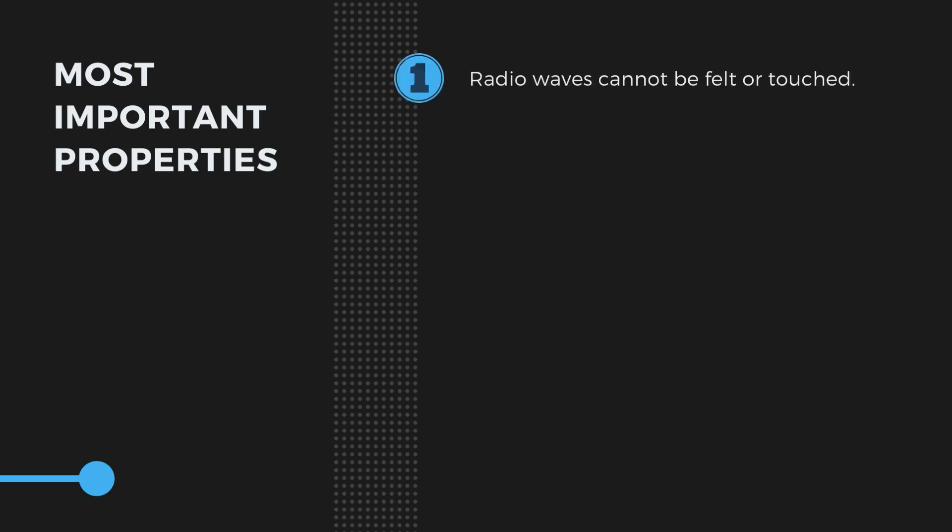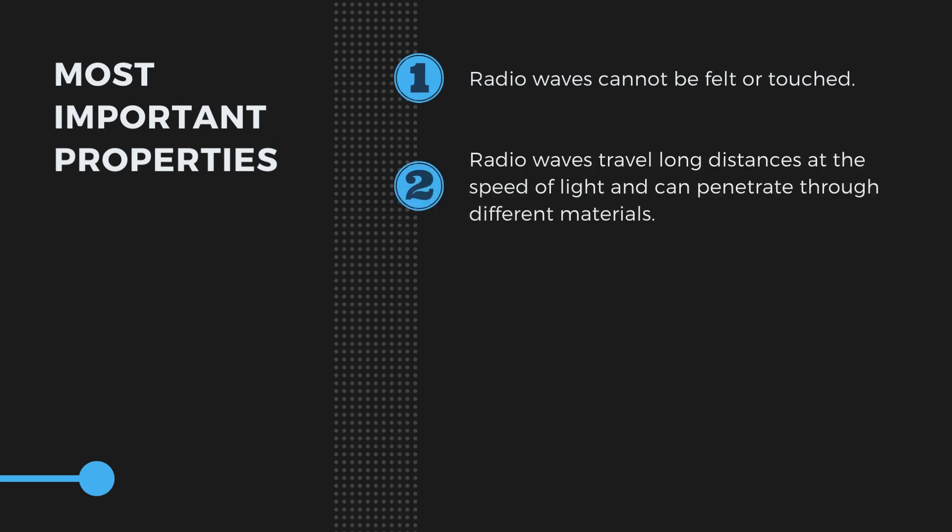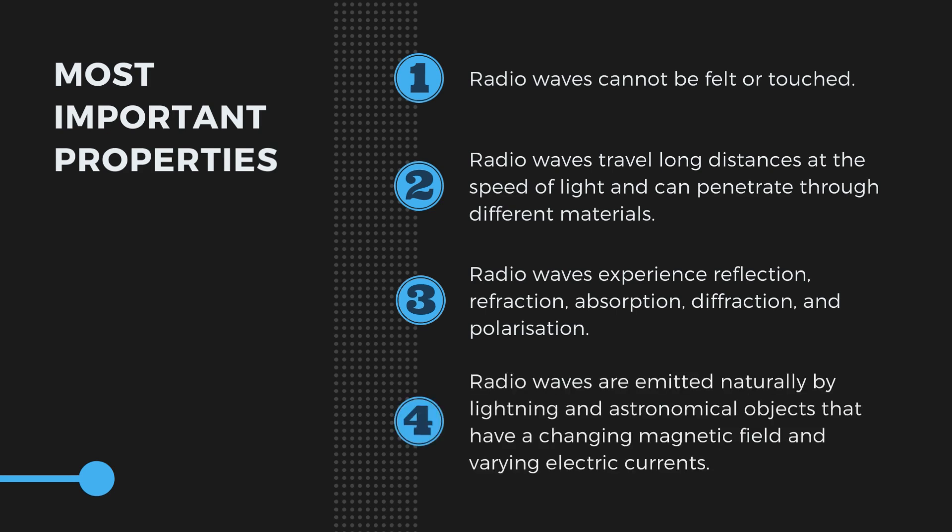The most important properties are as follows. Radio waves cannot be felt or touched and they are invisible. Radio waves can travel long distances at the speed of light and can penetrate through different materials. Radio waves experience reflection, refraction, absorption, diffraction and polarization. And lastly, radio waves are emitted naturally by lightning and astronomical objects that have a changing magnetic field and varying electric currents.